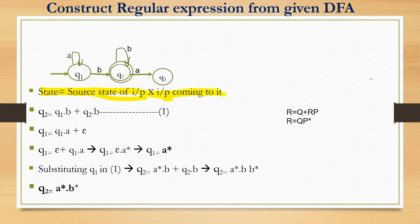Writing the state equations: each state equals the source state times the input coming to it. For state Q2: inputs coming to Q2 are from Q1 with input B, and from Q2 with input B. So Q2 equals Q1·B plus Q2·B.